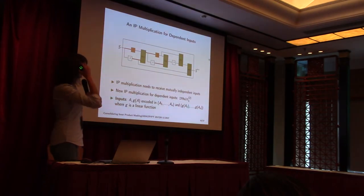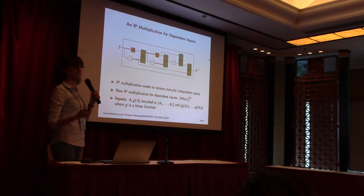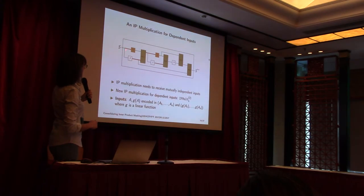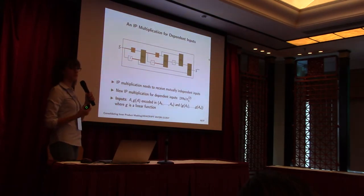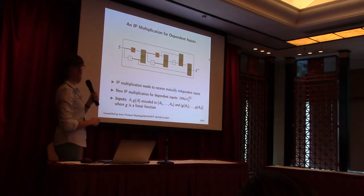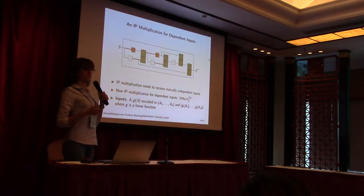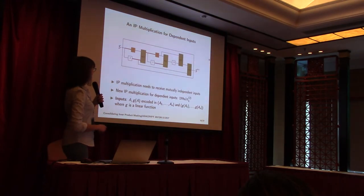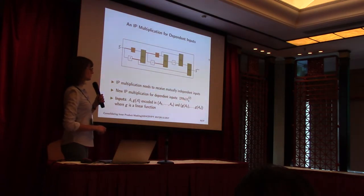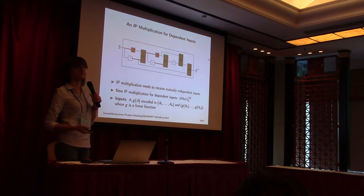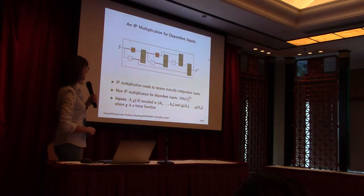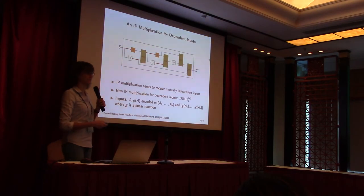Looking in more detail at the circuit, the refreshing is used before inputs are fed into the multiplication, because the multiplication needs independent inputs. The red lines show dependent values that need to be refreshed. However, the refreshing needs a lot of randomness, so it's expensive. To optimize the amount of randomness needed, we designed a new multiplication scheme for dependent inputs: IPmul=2. This means the multiplication scheme can take two dependent inputs A and G(A), where G is a linear function, using less randomness.